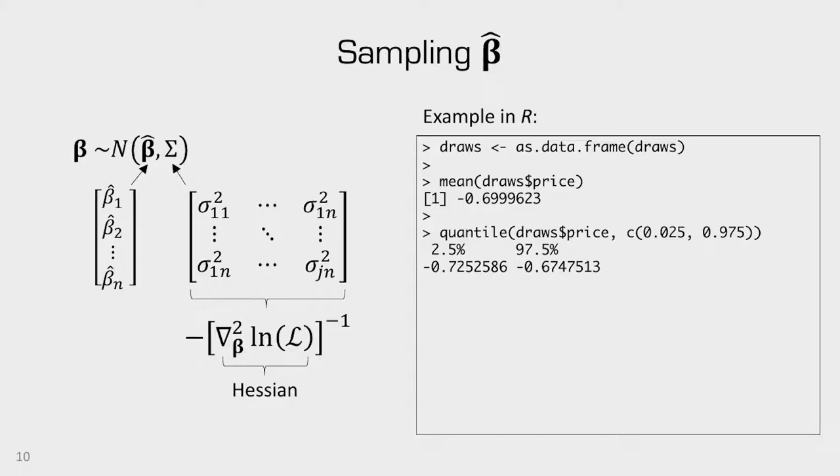Once we have all those draws, we can then use them to calculate some summary statistics, like take the mean or use the quantile function to pull off the upper and lower bounds of a confidence interval. So, if you look at these results, you'll see that the mean of the draws is about -0.7, which was the estimate that we had for that beta coefficient.